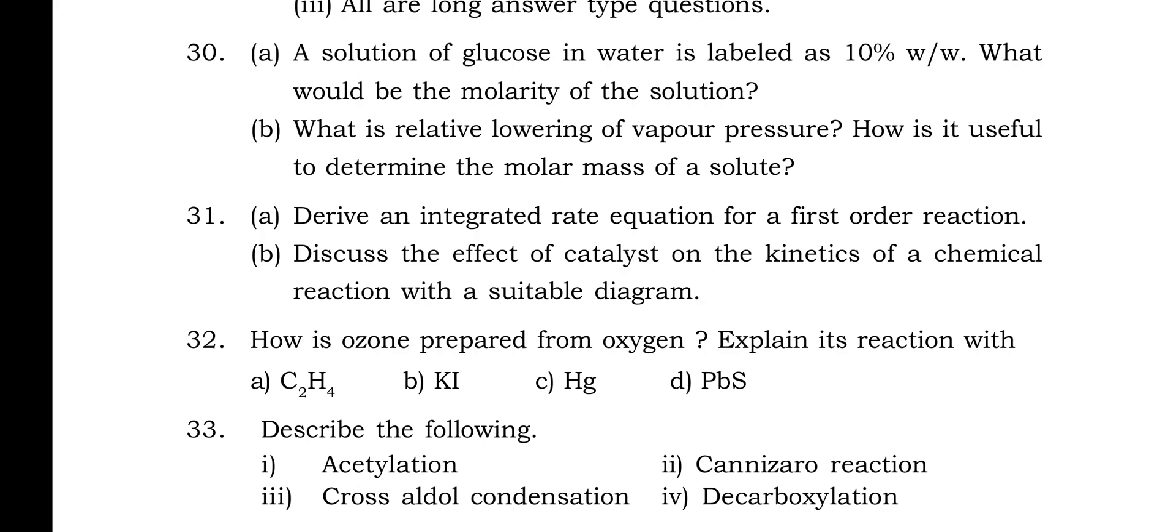Question 31: In this also (a) and (b) is there. (a) is: Derive an integrated rate equation for a first order reaction. (b) is: Discuss the effect of a catalyst on the kinetics of a chemical reaction with a suitable diagram.